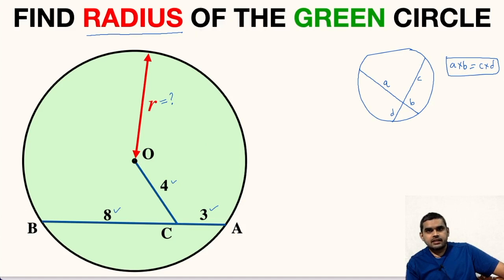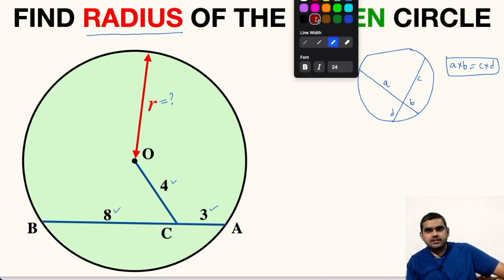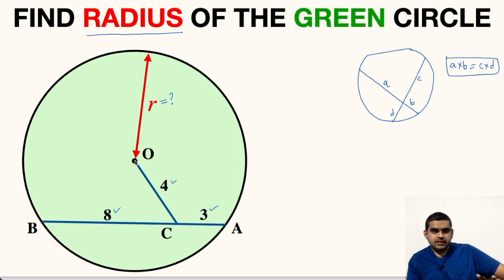For that let us do some modification here and the modification is very simple that is we have to extend this line segment OC. Let us extend it like this and from C also let us extend it. This will be the diameter.